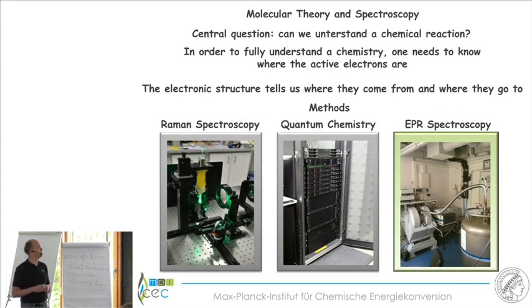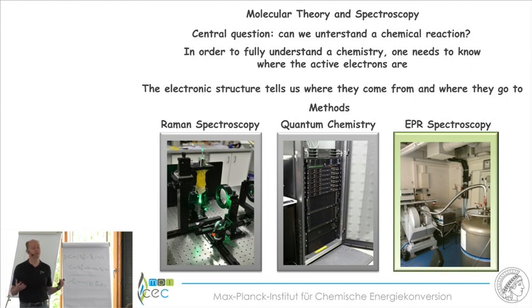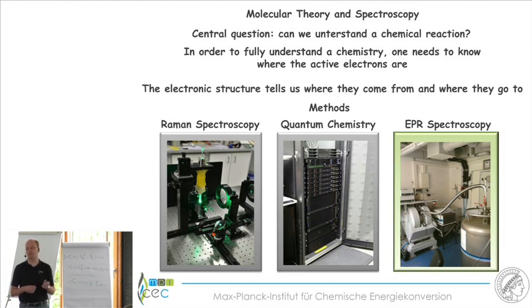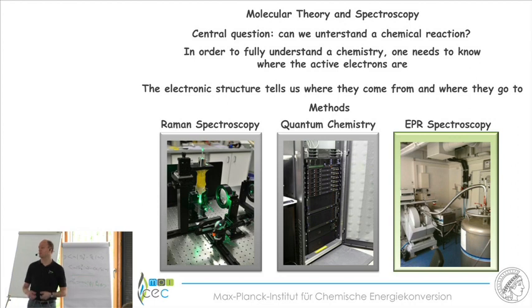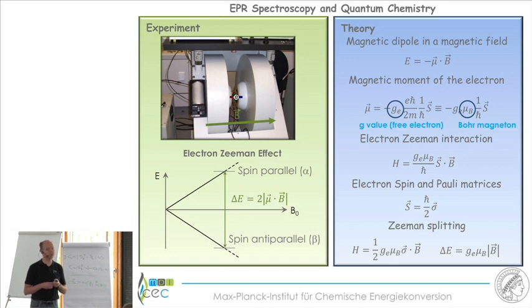Why is EPR so useful? If you want to fully understand a chemical reaction, you need to know where the active electrons are — the electronic structure tells us where they come from and where they are going. The three methods I use most are Mössbauer spectroscopy, quantum chemistry, and EPR spectroscopy. Let's now dive a little bit more into the theory.